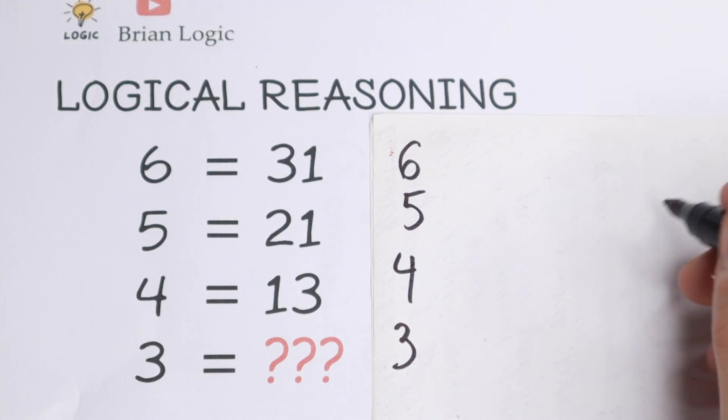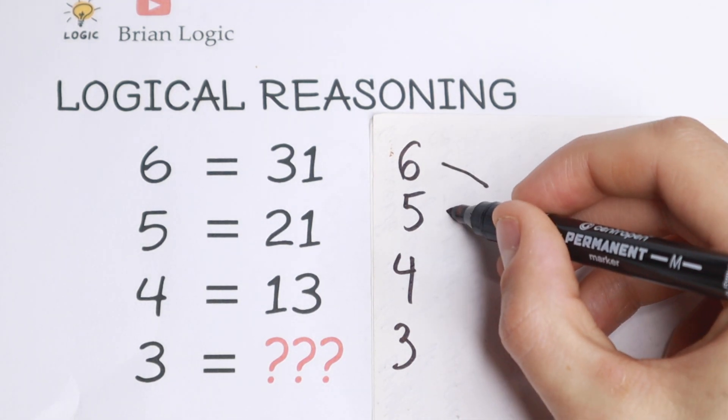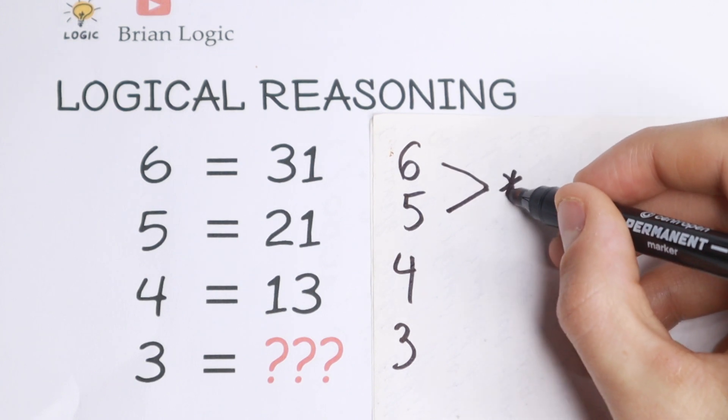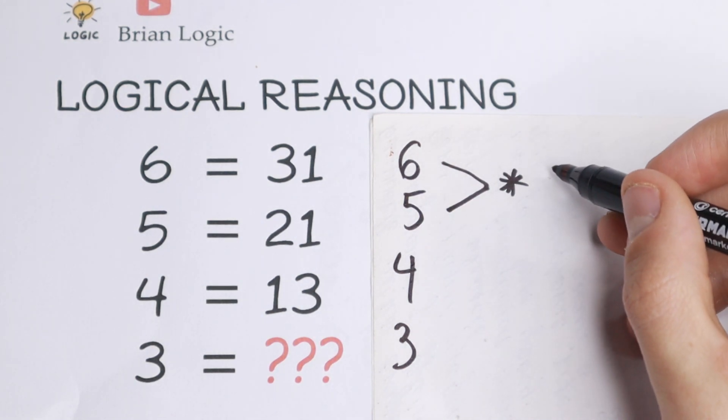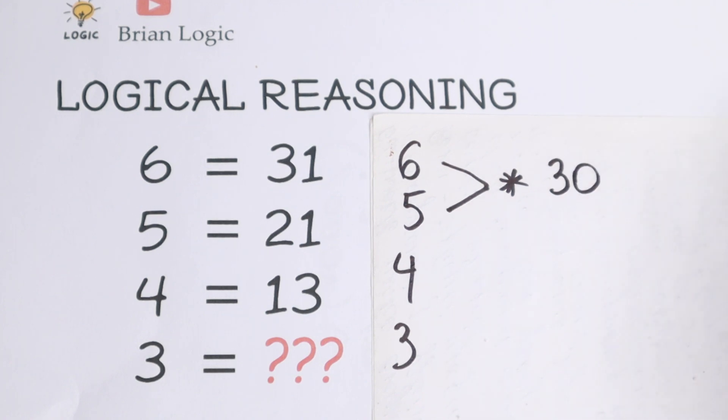I see a really interesting case. If we multiply these two numbers, if we're talking about multiplication, we'll have 6 times 5, that will be 30.